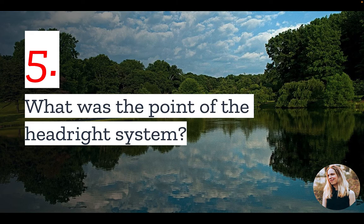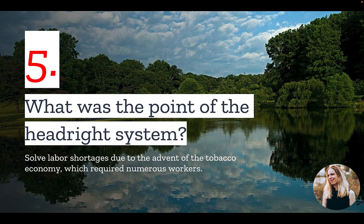Number five: what was the point of the head right system? The system was intended to solve labor shortages due to the advent of the tobacco economy, as the tobacco crop required numerous workers.